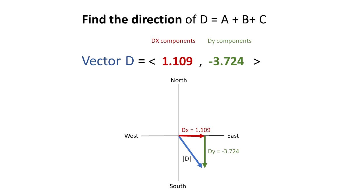In order to find the angle theta, we have to use the inverse tangent of Dy over Dx, because it is opposite over adjacent. We get that the inverse tangent of negative 3.724 over 1.109 equals negative 73.417 degrees.